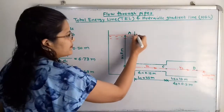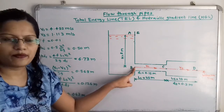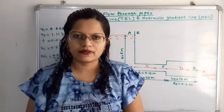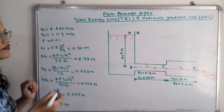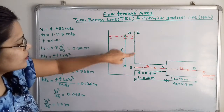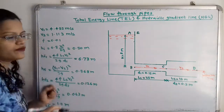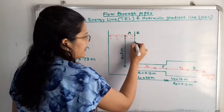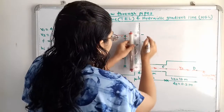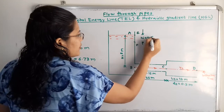At the entrance of pipe one, point B, there is a head loss at the entrance hi = 0.50 meters. From point E on the total energy line, we subtract 0.50 meters downward to get point F. We mark this with an arrow showing hi = 0.50 meters.